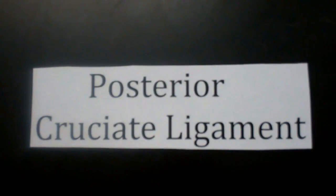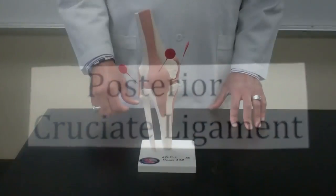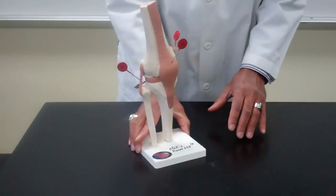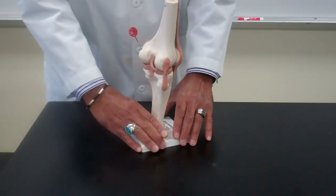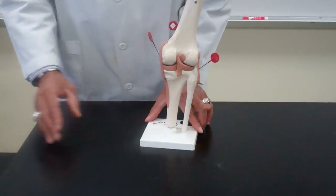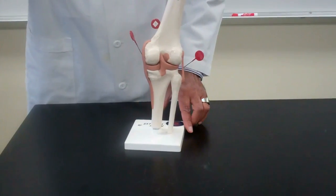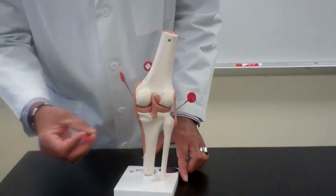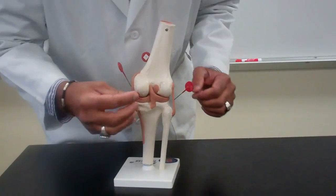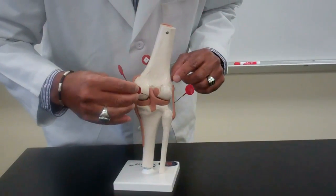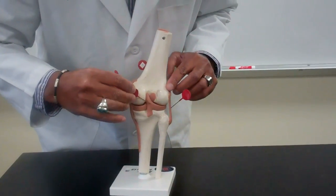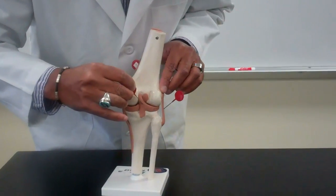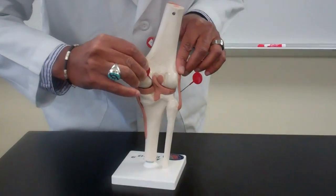Posterior cruciate ligament. We'll go to the posterior part of the knee and label that number four — that'll be this ligament right here.